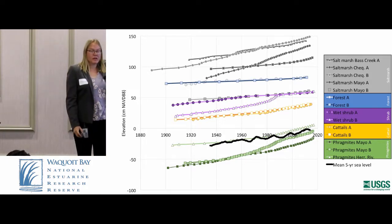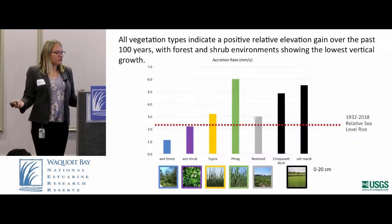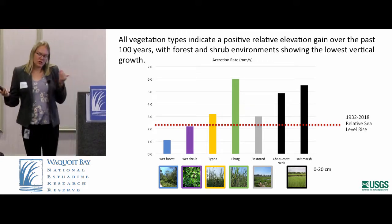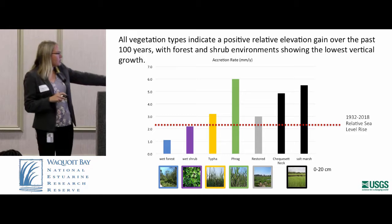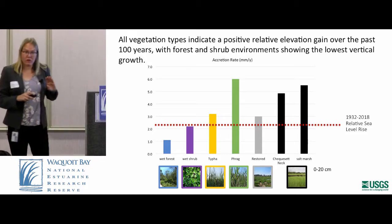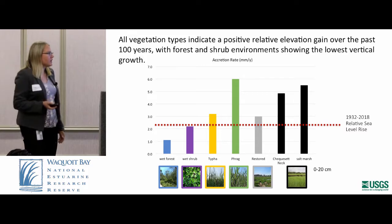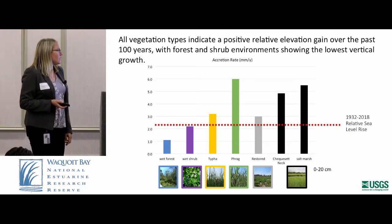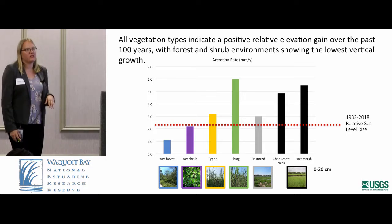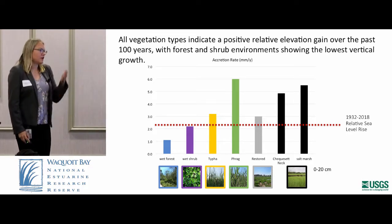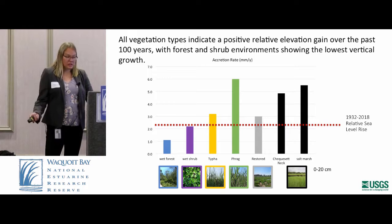We've lost elevation capital while that system was diked, and that's important because we want to regain it and regain the system's ability to respond to sea level rise. Looking at averages of the top 20 centimeters — the most recent accretion — color-coded from wet forest to shrub to Typha to Phragmites, then restored marshes and natural marsh: the red line is relative sea level rise since 1930. Phragmites is growing very fast vertically — it established on a sandbar after some changes were made to the dike — and has great capacity to build vertically.